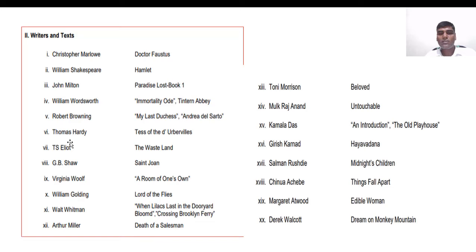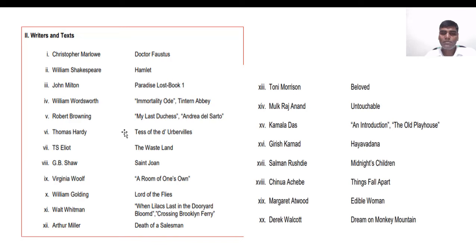The next important novel is Thomas Hardy's Tess. Sometimes simple questions are asked from texts that we overlook — for example, they may ask the year of publication. We often learn every character, theme, act, and scene thoroughly but forget details like the year of publication or subtitle. You have to be very keen on identifying all these aspects and make notes. Tess is Thomas Hardy's most acclaimed novel with the subtitle 'A Pure Woman.'